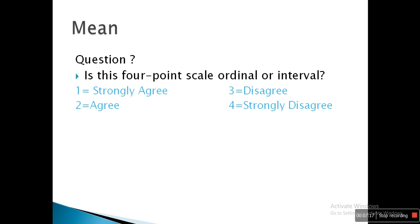Here is a question for revision: a four-point scale with options strongly agree, agree, disagree, and strongly disagree — is this ordinal or interval data? This is ordinal data, where we assign numbers to options and arrange them by rank. It is not interval data. Interval data uses ranges like age groups 10–20, 20–30, 30–40. So this scale is ordinal data.